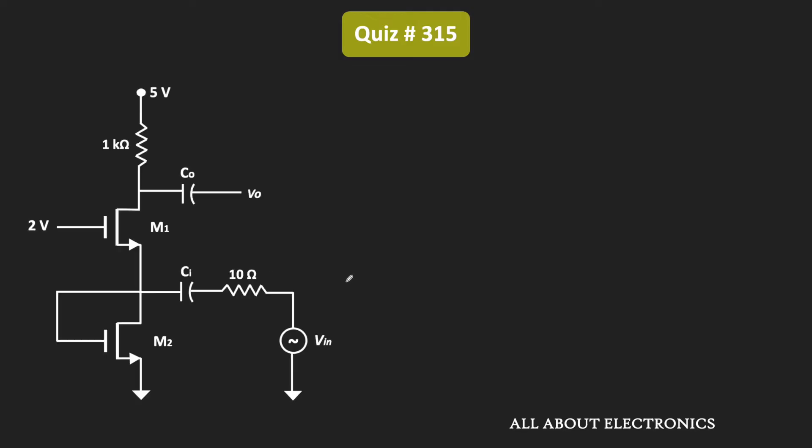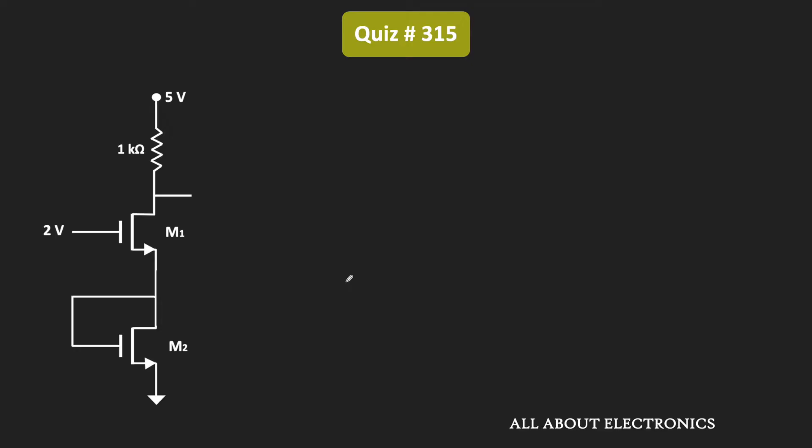Using the small signal analysis, it is possible to find the voltage gain. For the small signal analysis, we first need to know the value of transconductance. So using DC analysis, let us find the value of the transconductance. For the DC analysis, these capacitors will act as an open circuit. The equivalent circuit will look like this.